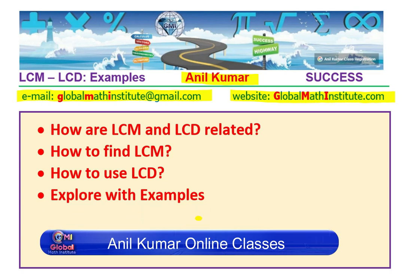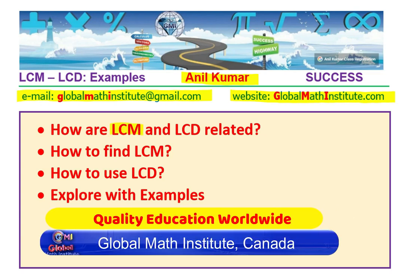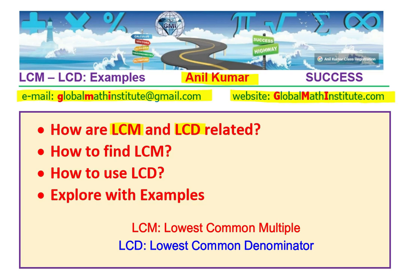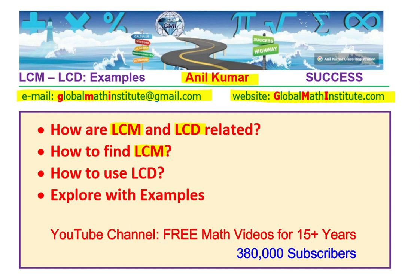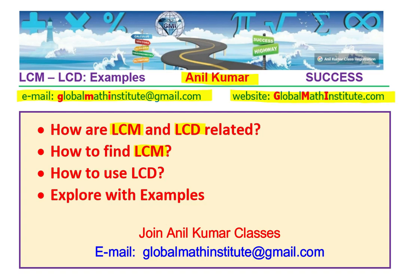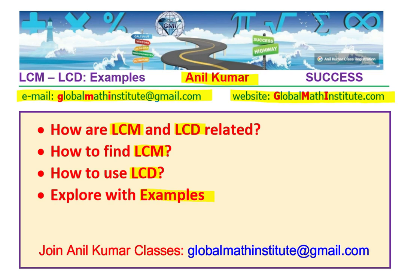Now let us try to understand these two terms: LCM, which is Lowest Common Multiple, and LCD, which is Lowest Common Denominator. How are they related? We'll also look into techniques to find LCM. Once you find LCM, it can act as the Lowest Common Denominator to add or subtract fractions. We'll take up some examples to explain the idea.